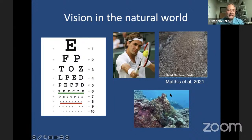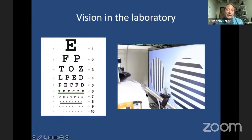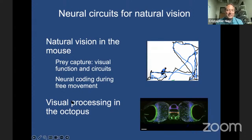Despite this richness of how we and animals use vision out in the natural world, we often study it in the lab in a situation very similar to the eye exam — a head-fixed subject looking at two-dimensional geometric stimuli making an arbitrary decision. What I want to tell you about today is our work trying to move towards paradigms that better capture how we actually use vision. I'll start with prey capture in the mouse, then freely moving neural recording, and finally visual processing in the octopus.